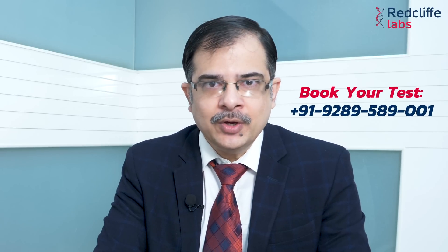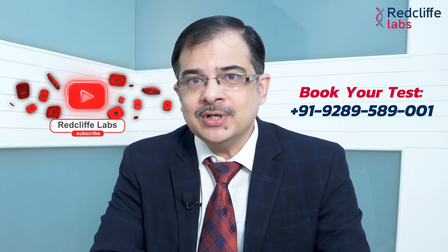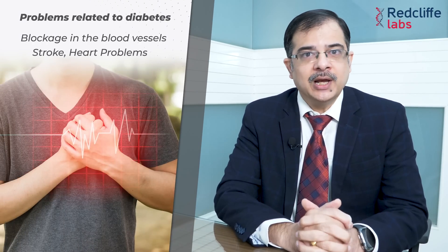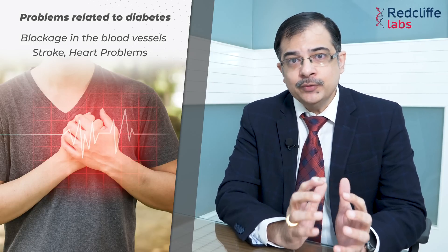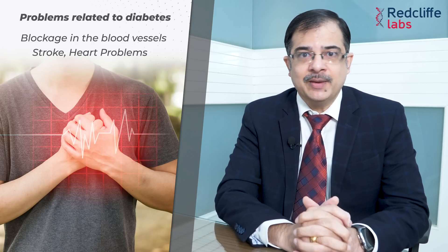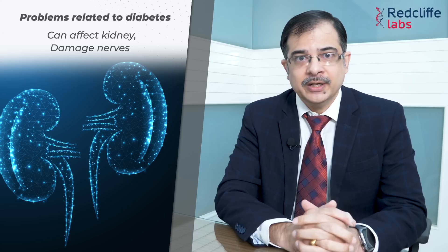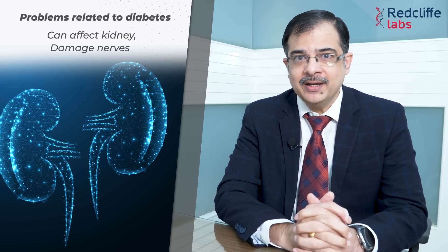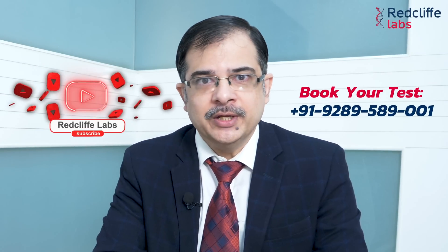Ab yeh diabetes itna common hai ki hamare kisi na kisi relative mein, family member mein — indeed humko bhi ho sakta hai, lekin humein pata nahi chalta. Toh iska prevalence bahut zyada hai, aur iske jo health problems hain woh kaafi severe aur serious ho sakte hain. Jaise ki blood vessels mein blockage ho sakta hai, stroke ho sakta hai, heart problems aa sakti hain. Jo condition 60-70 saal ke baad aati hain, woh 10-20 saal pehle aa sakti hain, us time pe jab hamara career peak pe hota hai. Kidney affect ho sakti hain, dialysis ki problem aa sakti hai, nerves damage hoti hain jisse foot ulcers ki bhi problem aa sakti hai. Toh isliye diabetes ko lightly nahi lena hai — isko appropriately control karna hai, blood sugars ko control karke rakhna hai.